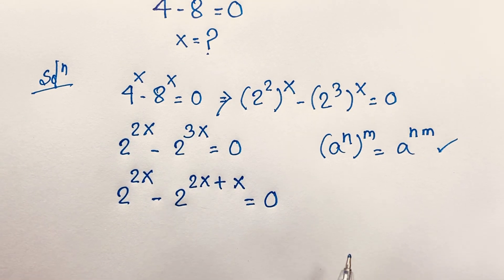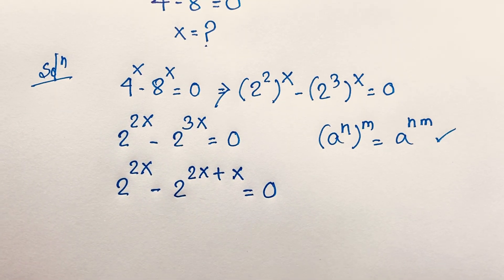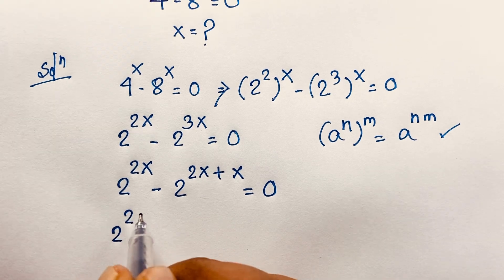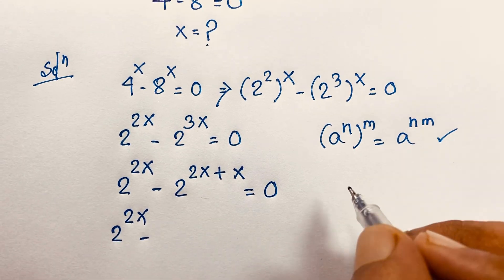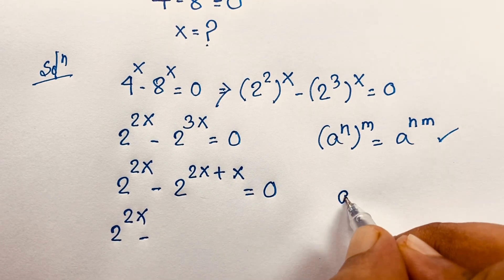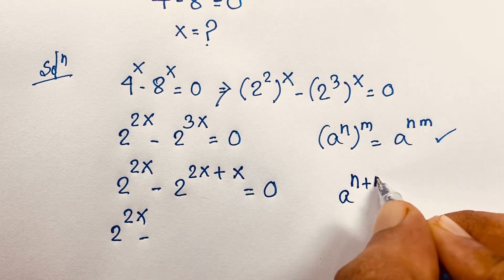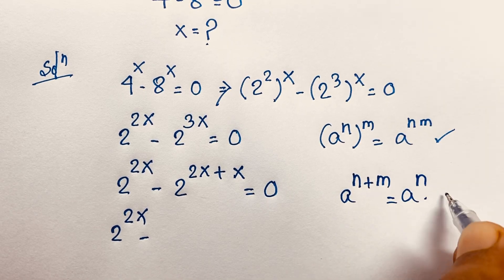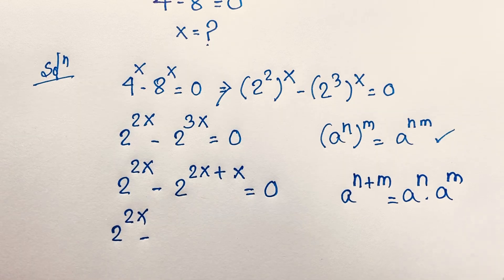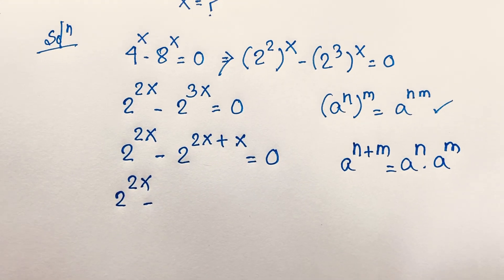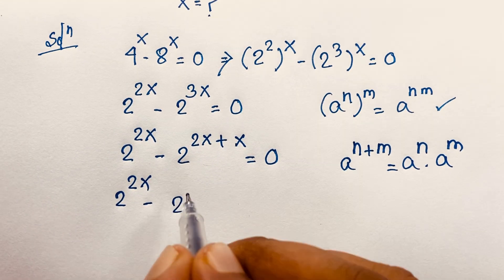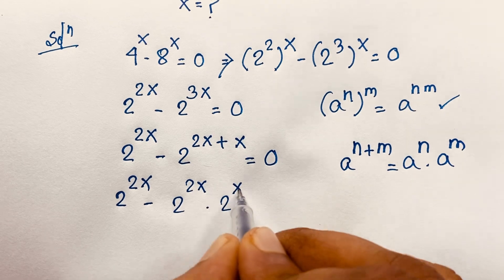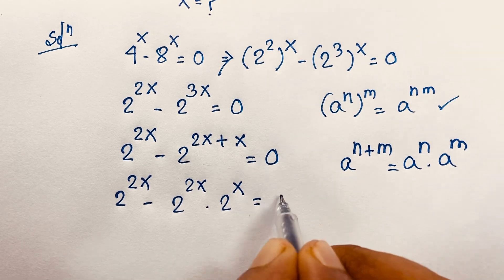2x plus x equals 3x. Then, 2 to the power 2x minus, and we know the exponential formula a to the power n plus m equals a to the power n times a to the power m. If I apply this math formula here, it will be 2 to the power 2x times 2 to the power x, is equal to 0.